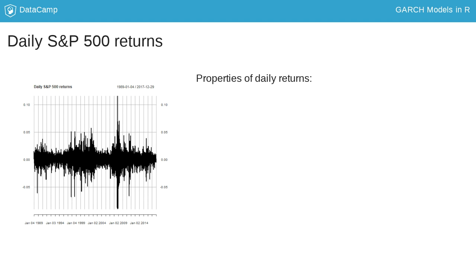In case of the S&P 500, you can see that the average daily return is close to zero and that its variability changes over time. There are periods with low variability and periods with high variability.